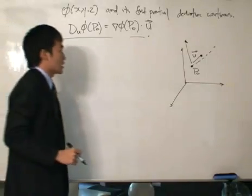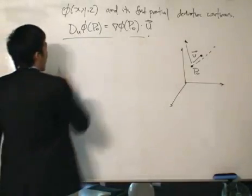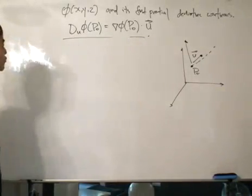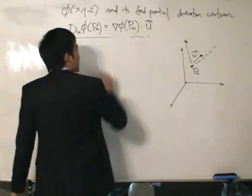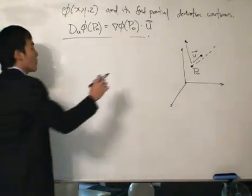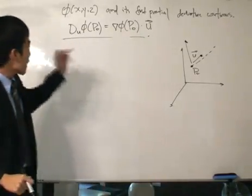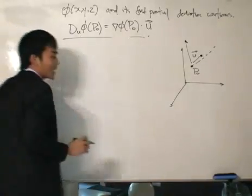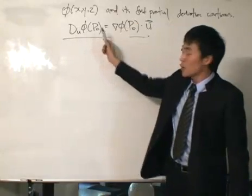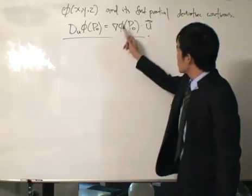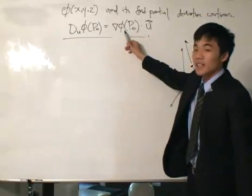The theorem is that the greatest change of phi — the greatest value of the directional derivative — would be in the direction of del phi evaluated at p0, and that value is simply the magnitude of del phi evaluated at p0.